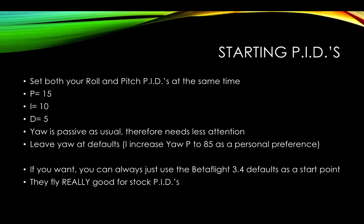So then to start, basically you want to set both your roll and pitch PIDs at the same time. Set your P 15, I to 10, and D to 5. Yaw is passive so I just kinda leave it at my default of 85 for P and whatever the Betaflight default is, I can't quite remember. The Betaflight default for P right now is 65 I believe. So, I mean, that should be fine. It's a pretty passive factor of the quad. It doesn't affect it as much as roll and pitch does.